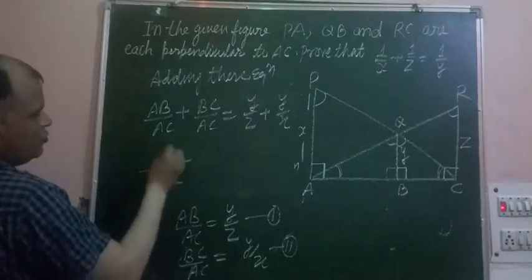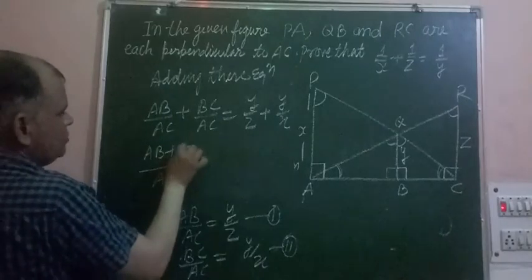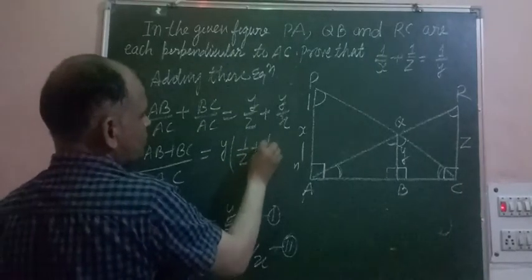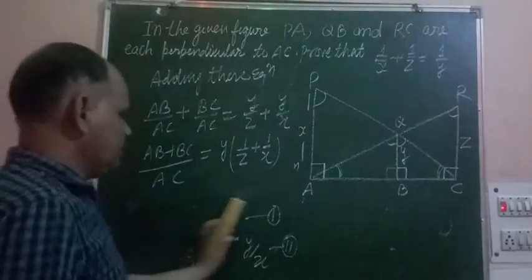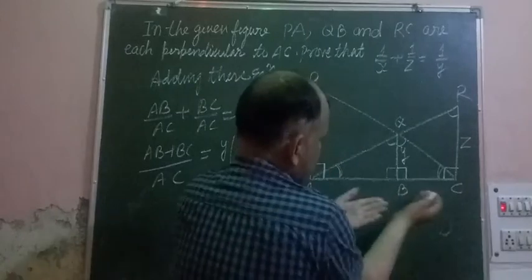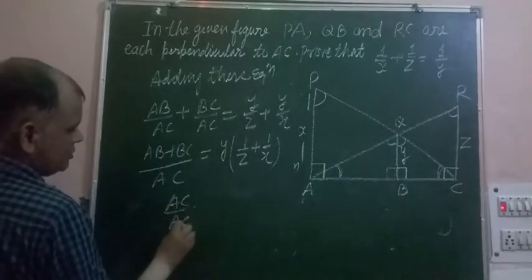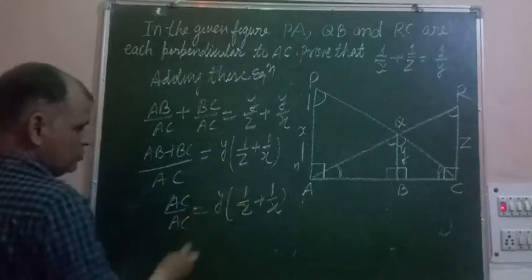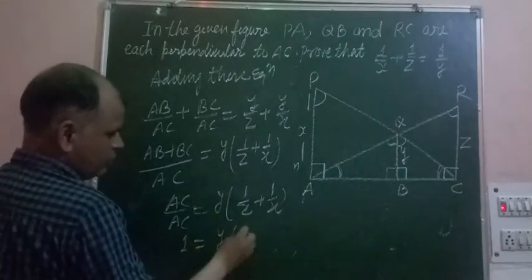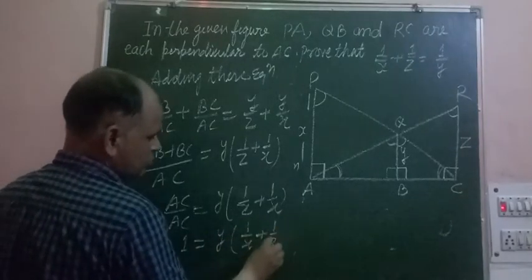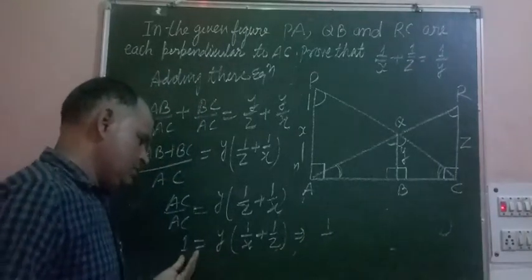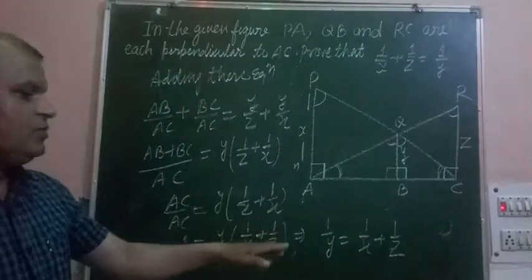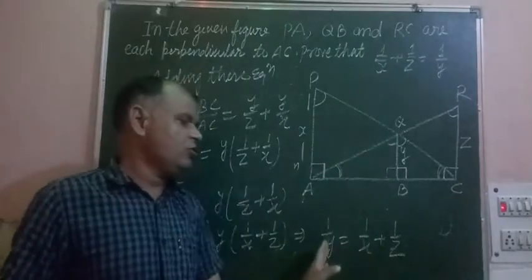Adding the equations, AB over AC plus BC over AC equals y over z plus y over x. Since AC is the same denominator on the left, we get AB plus BC over AC. Since AB plus BC equals AC, the left side becomes AC over AC which equals 1. On the right, factoring out y gives y times (1/z + 1/x). So 1 equals y times (1/x + 1/z), which means 1/y equals 1/x plus 1/z.